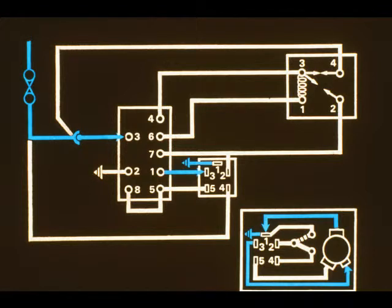If high speed is selected, current leaves the column switch at pin 1 and passes via pin 3 of the motor connector to the high speed brush.